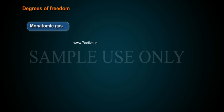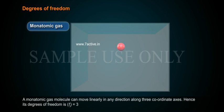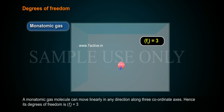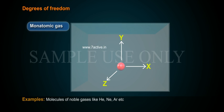Monatomic gas: A monatomic gas molecule can move linearly in any direction along three coordinate axes. Hence, its degrees of freedom is Ft equal to 3. Examples: molecules of noble gases like helium, neon, argon, etc.